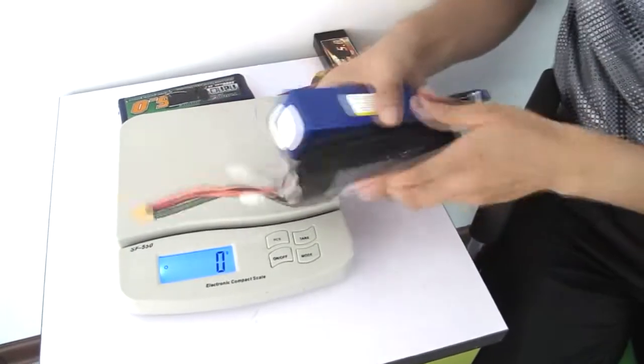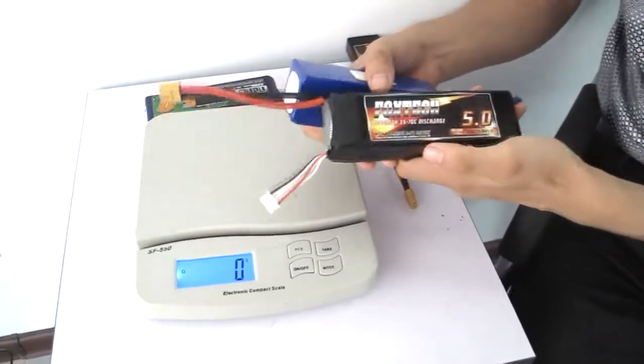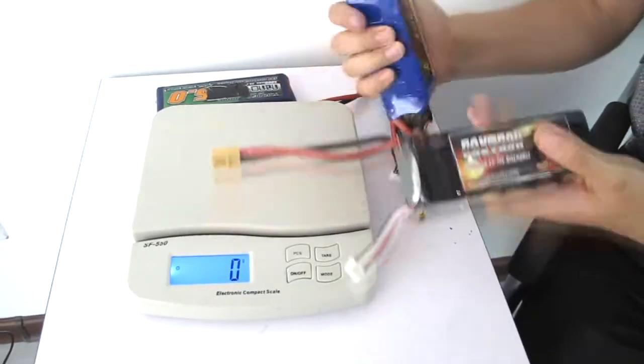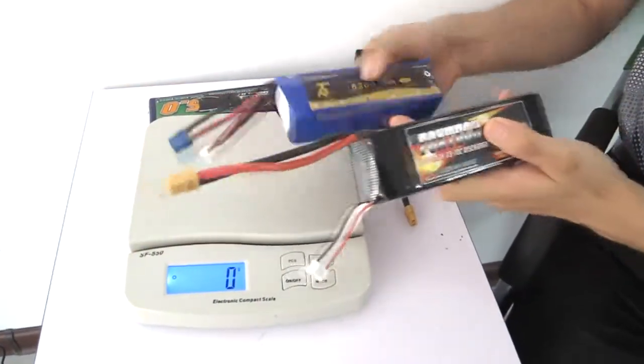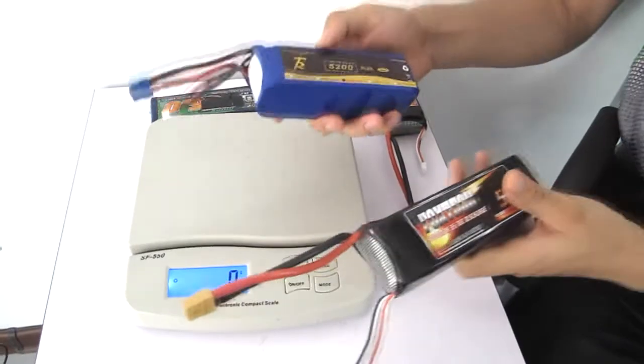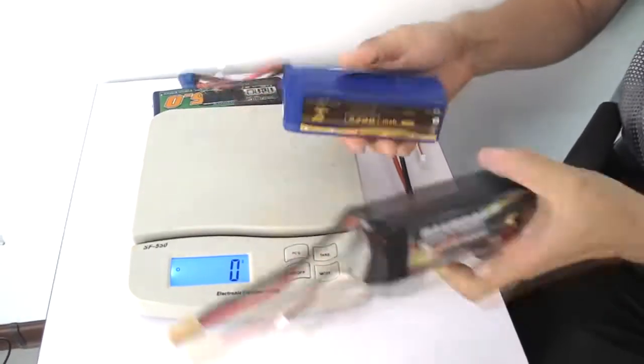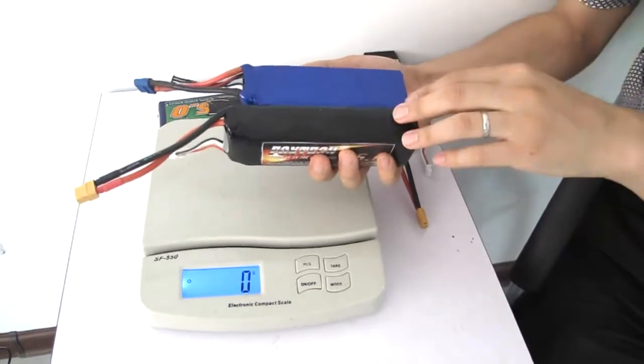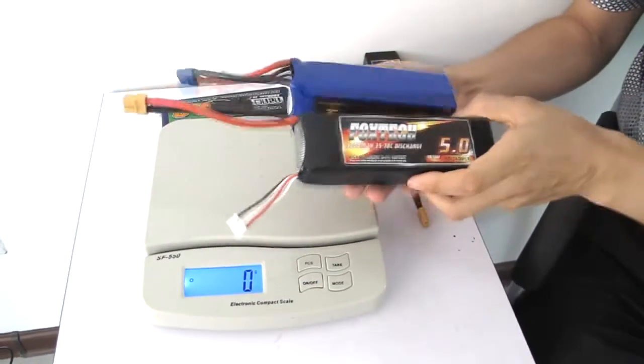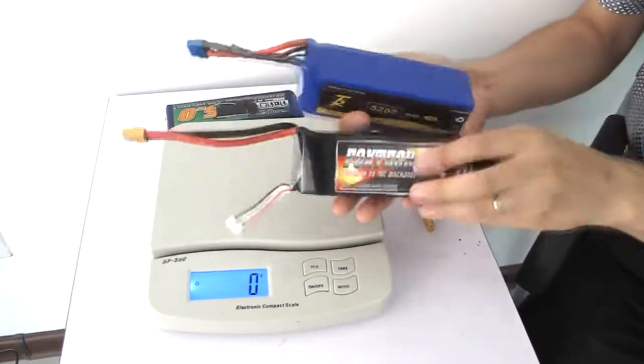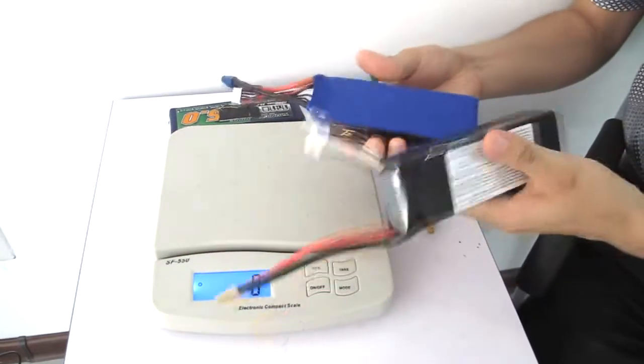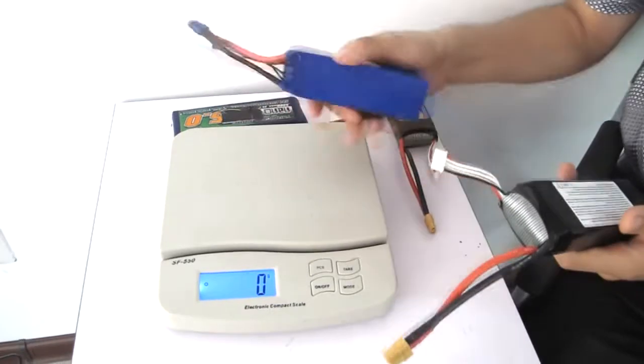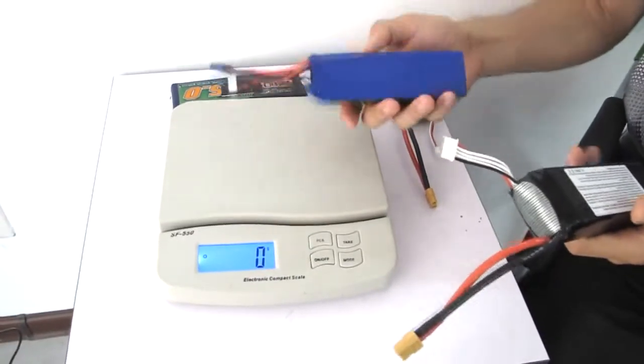What's in my hand is our FOXTECH 4S 5000mAh battery. Here is also another battery, it says 5200mAh for 4S LiPo battery. Comparing with the size you can find this one is quite bulky, and my FOXTECH one is quite slim and also feels harder. Let's see the weight comparison on this meter.